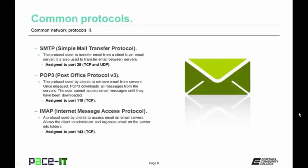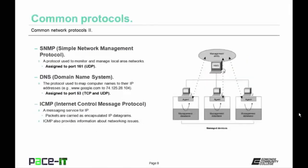Internet Message Access Protocol, or IMAP, is a protocol also used by clients to access email on email servers. It allows the client to administer and organize email on the email server before it's downloaded. Many businesses and organizations use IMAP to replace POP3 for their email client needs. IMAP is assigned to port 143 and uses TCP as its layer 4 transport protocol. Let's move on to SNMP — Simple Network Management Protocol. It's a protocol used to monitor and manage local area networks, assigned to port 161 and using UDP by default.